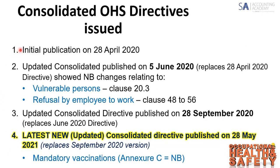Looking at the consolidated directives that were issued: the initial publication was issued on the 28th of April 2020. It was then updated in June the following year to bring into effect the concept of vulnerable persons and what happens when somebody refuses to work due to the COVID-19 pandemic — whether it was a real or perceived unsafe environment. They were allowed to refuse work under those circumstances, and the directive was updated again in September and then once more in May.